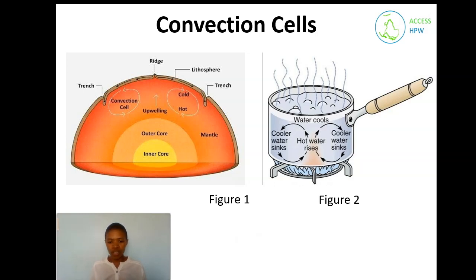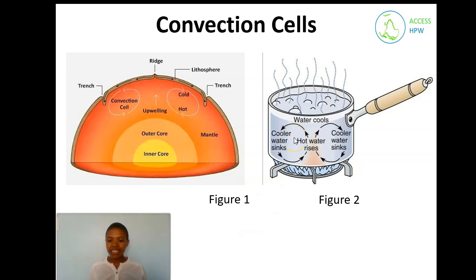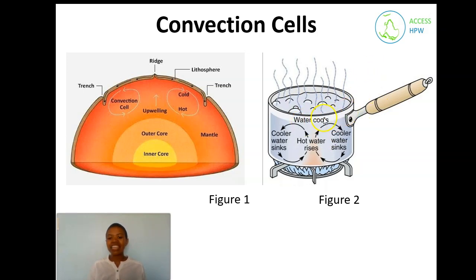The plates move either away from or towards each other, or with a pulling and pushing force. That circular motion is called a convection cell. A simpler way to understand this: when you boil a pot of water, the heat warms the cold water, the hot water rises to the top, cools, and sinks again. That movement is what causes the plates to move.